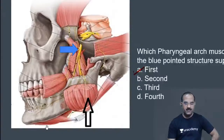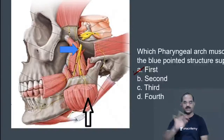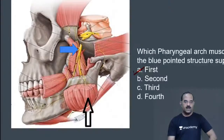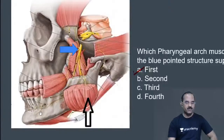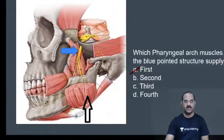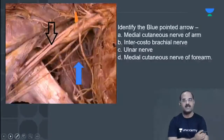The anterior belly of digastric lies on the mylohyoid muscle. The buccinator is visible here. The nerve emerging from the mental foramen is the mental nerve. It emerges from the mental foramen — that's the mental nerve.